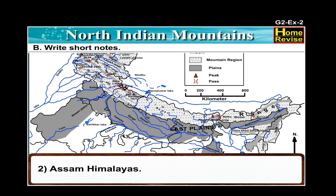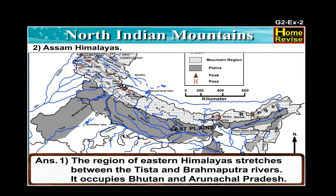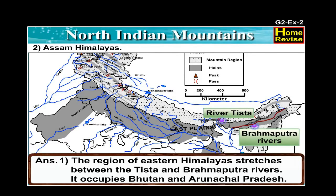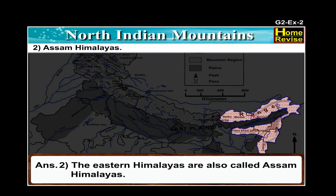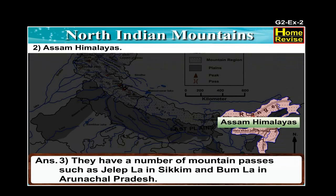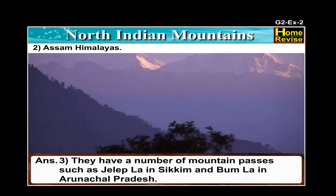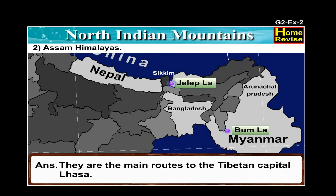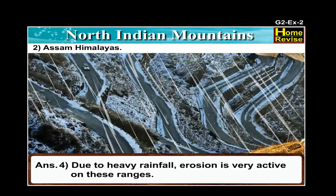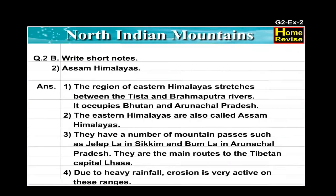Number two: Assam Himalayas. The region of eastern Himalaya stretches between the Tista and Brahmaputra rivers. It occupies Bhutan and Arunachal Pradesh. The eastern Himalayas are also called Assam Himalayas. They have a number of mountain passes such as Chalat La in Sikkim and Bamla in Arunachal Pradesh, which are the main routes to the Tibetan capital Lhasa. Due to heavy rainfall, erosion is very active on these ranges.